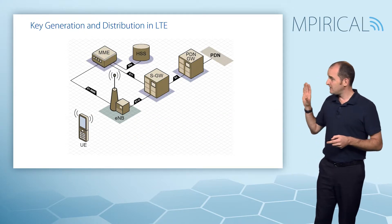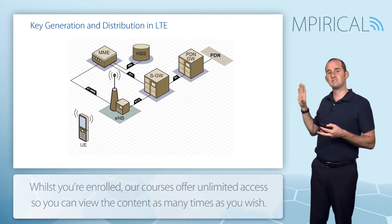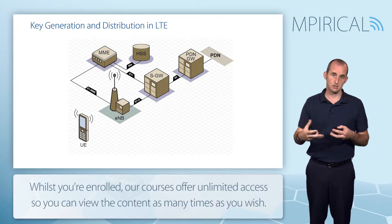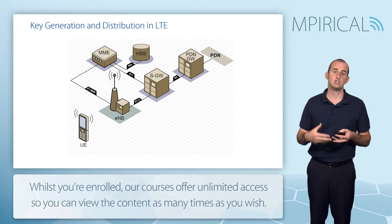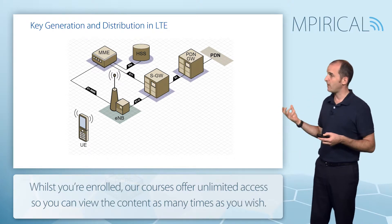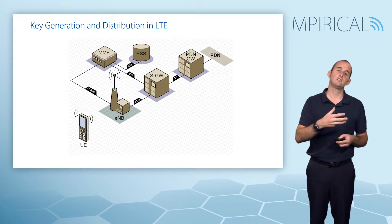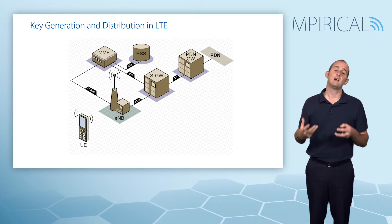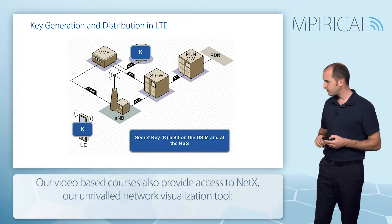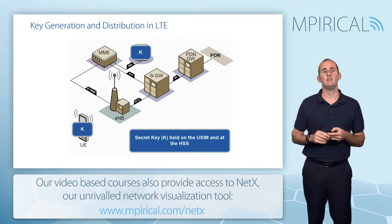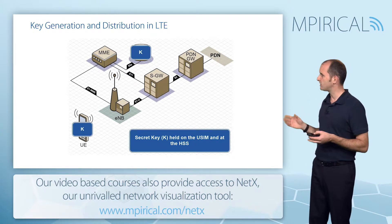Let's see exactly how those keys are created and ultimately distributed throughout the LTE network. This is an abridged version. Everything shown in this diagram takes place officially as part of EPS authentication and key agreement, but remember that EPS AKA itself is woven into the whole network attach process.